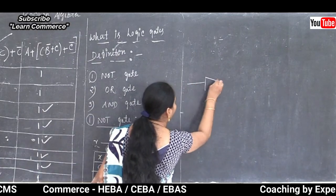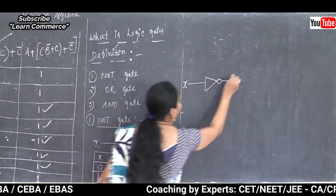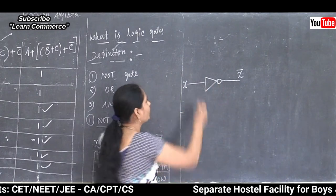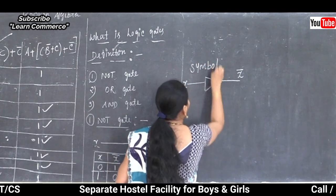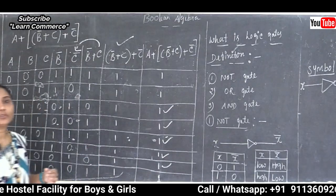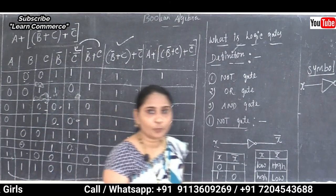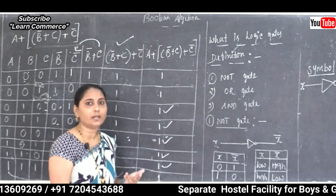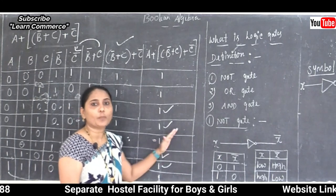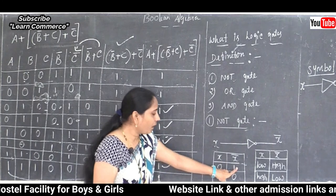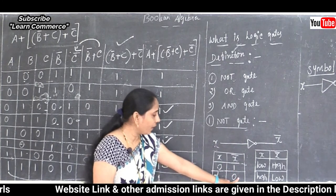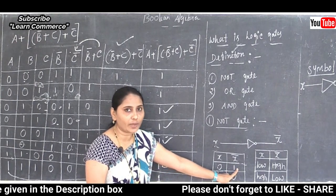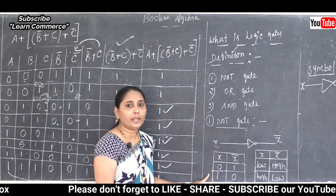This diagram shows the symbol of the NOT gate: X → complement X (X bar). The output state is always opposite or complement of the input. When output is 1, input is 0; when output is 0, input is 1.